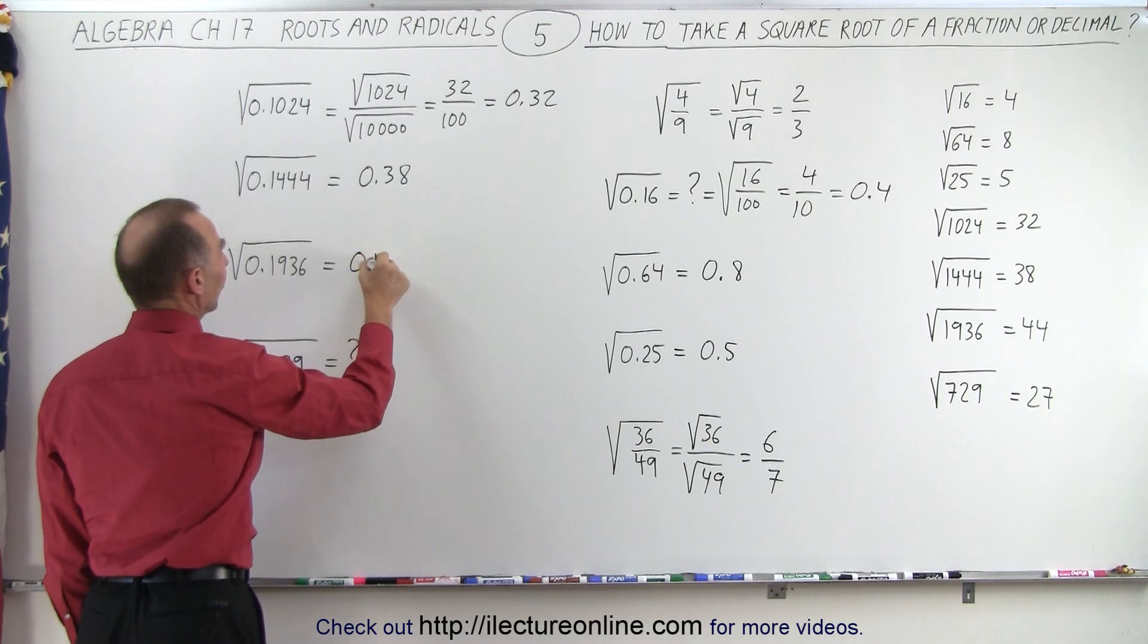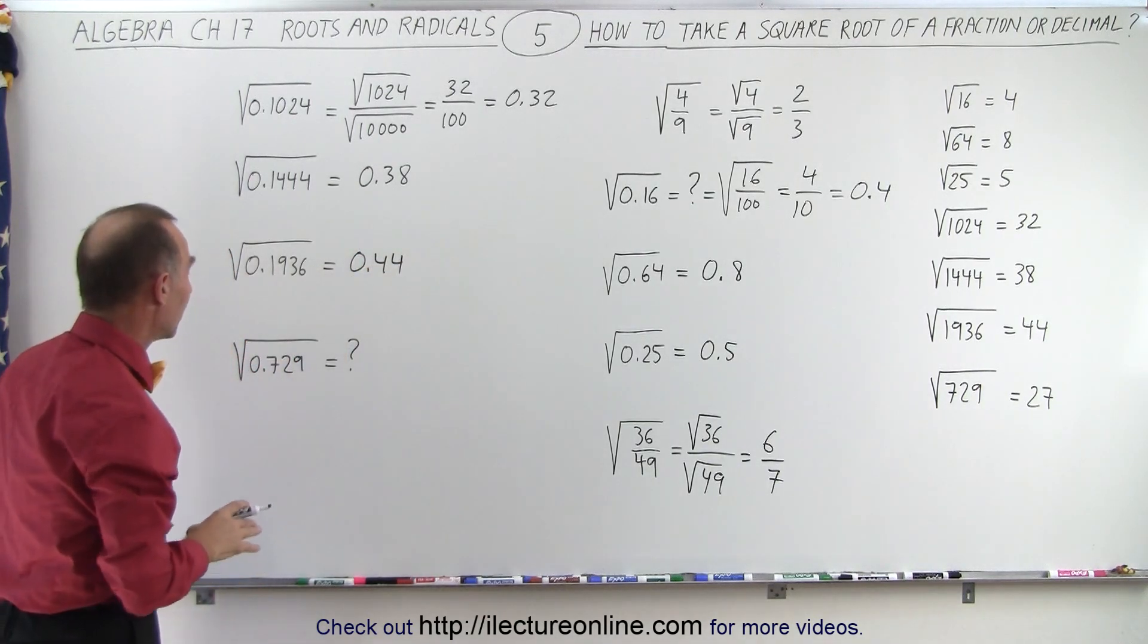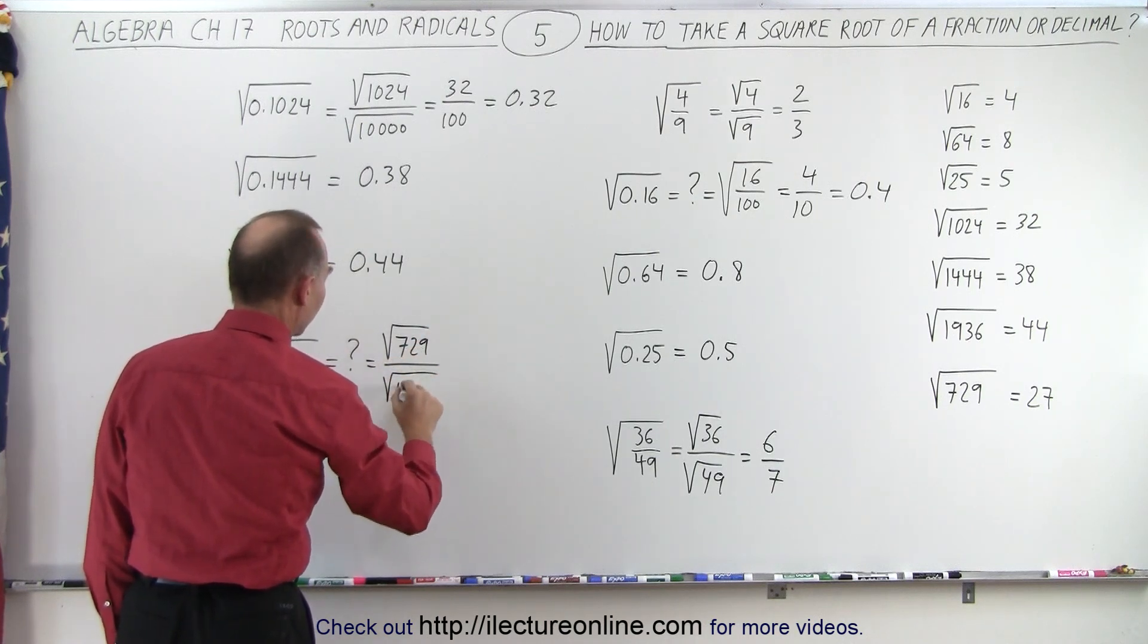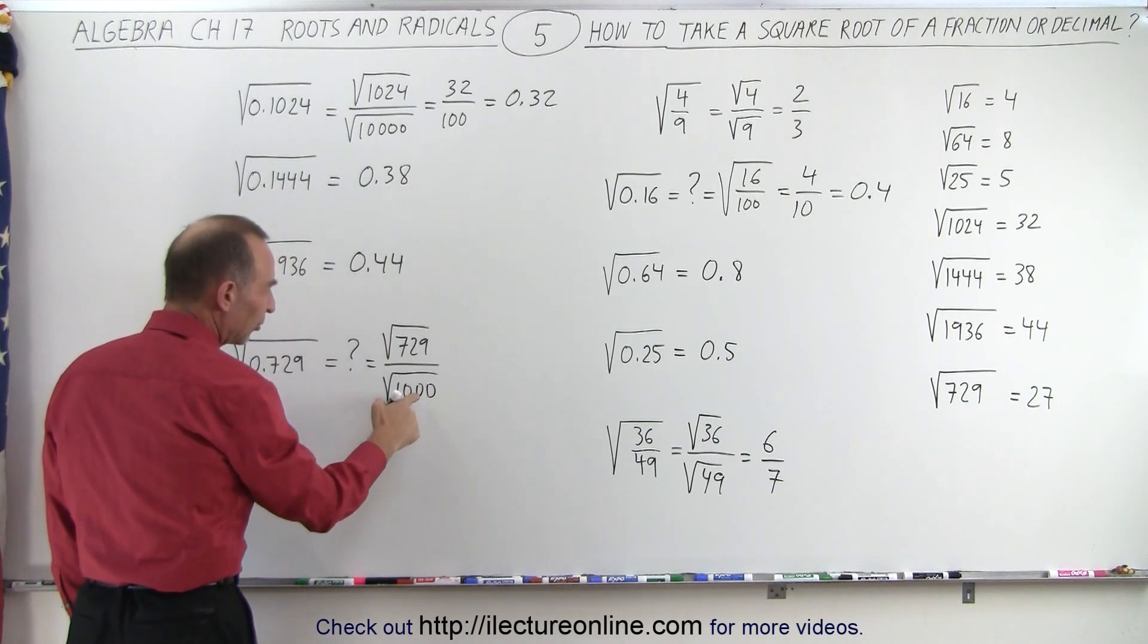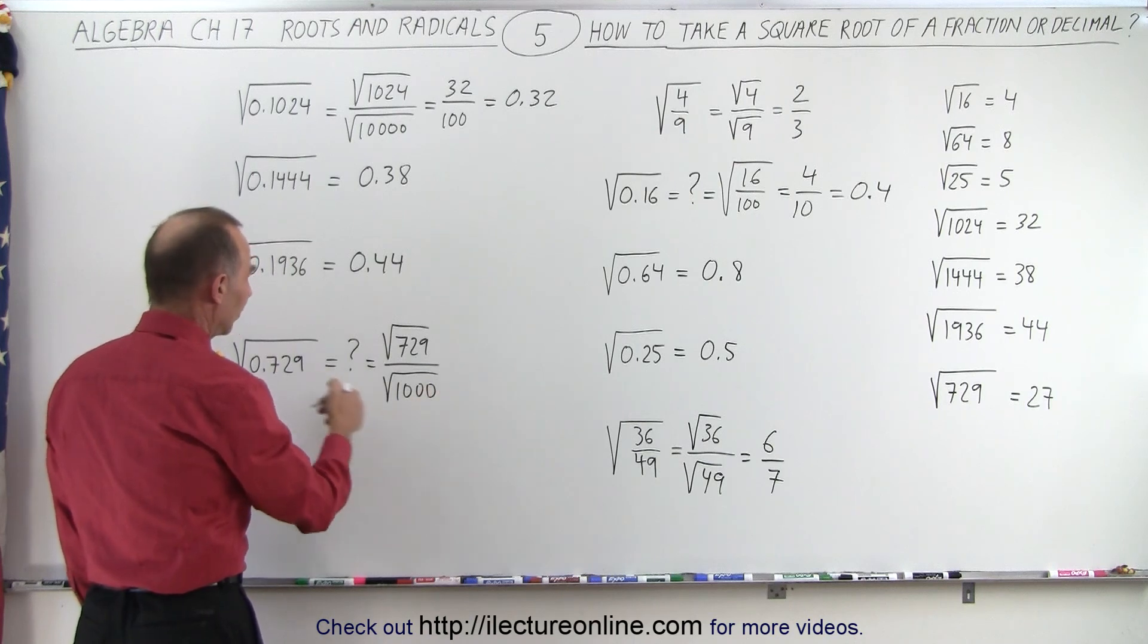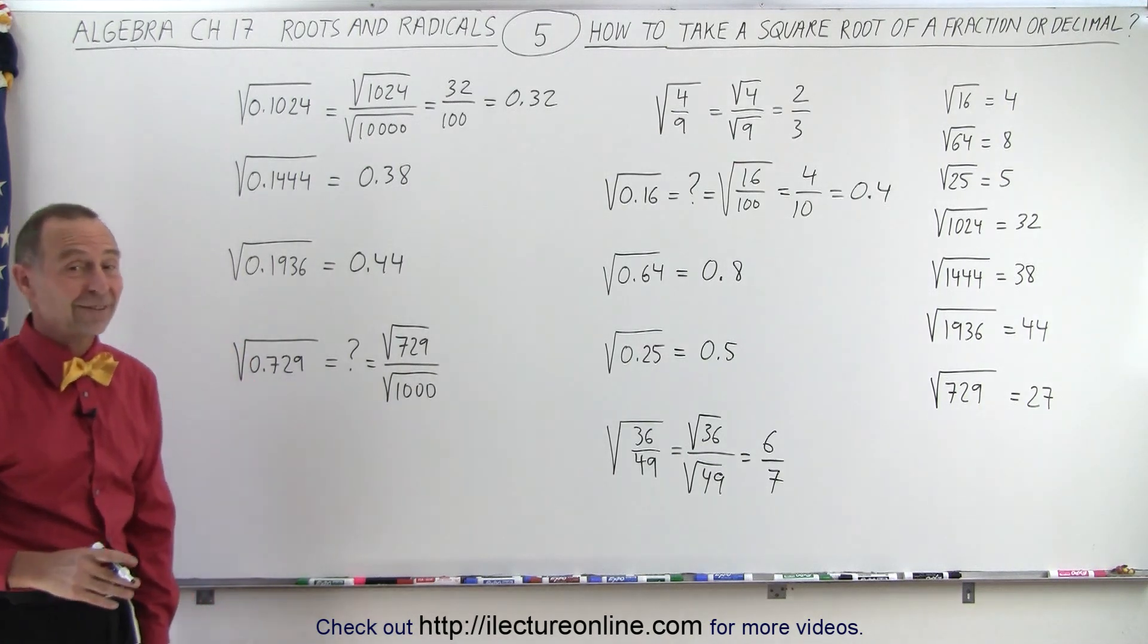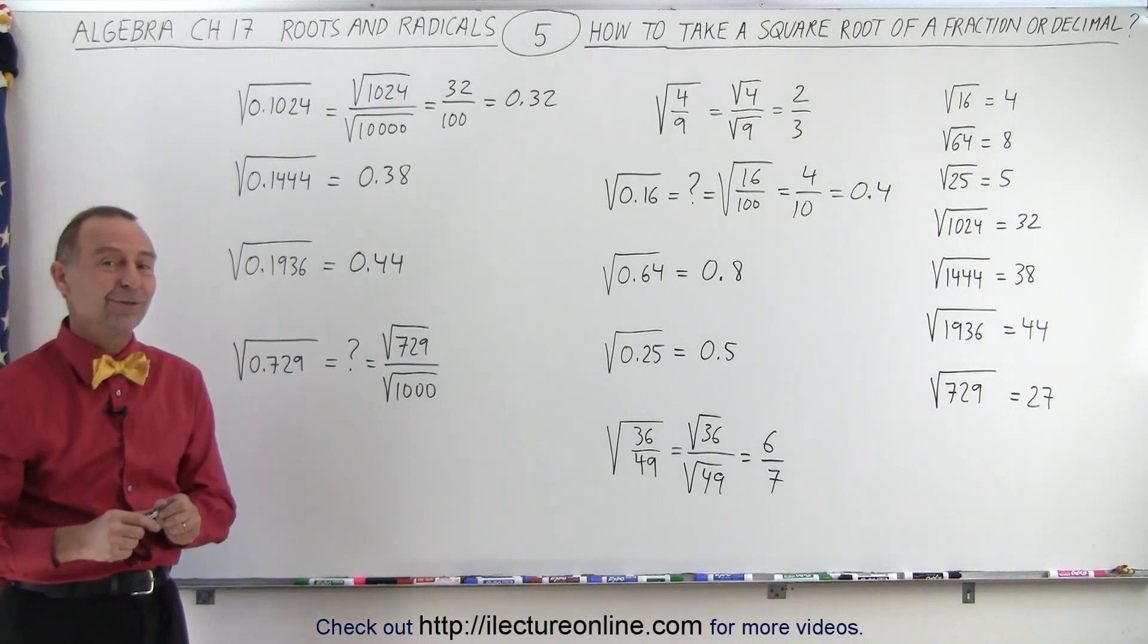But now we have an example here where it's not going to work, because if we write this as follows, this is equal to the square root of 729 divided by the square root of 10,000. Well, not 10,000, but 1,000, well, the square root of 1,000 isn't a nice, neat number like 10 or 100 or 1,000, and so therefore that trick doesn't really work here. So what we need to do then instead is, well, grab our calculator and see what the answer is. But that is how it's done for some very familiar numbers like those.